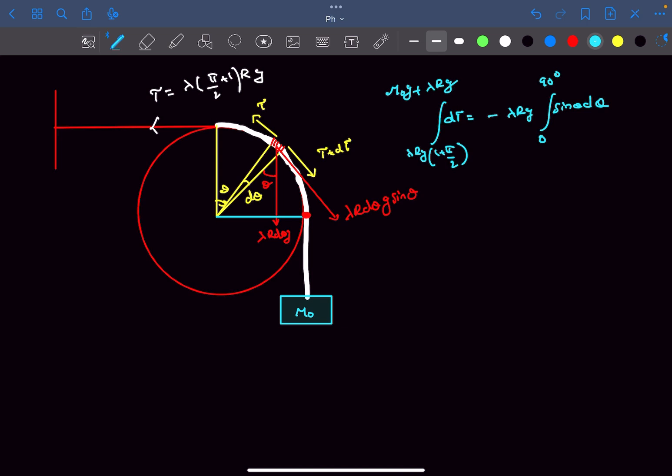Now if we solve the integral, the left side becomes M₀g - lambda R g (π/2) and the right side becomes -lambda R g integral of sine from 0 to 90, which is 1. From here we get the value of M₀ as lambda R g (π/2 - 1), and this is the answer to the problem.